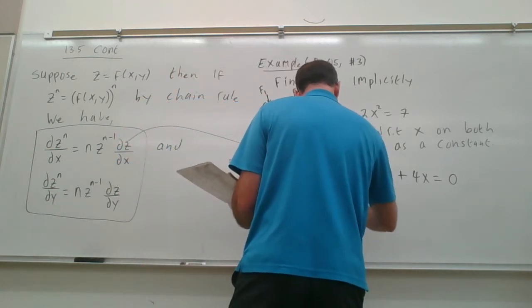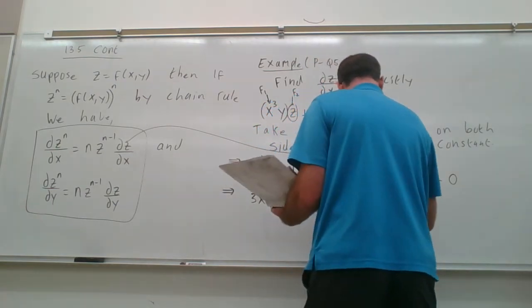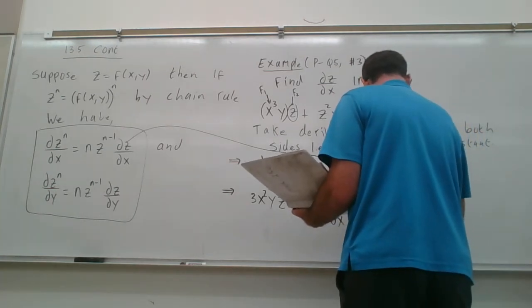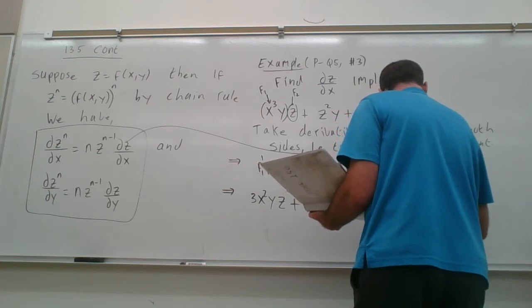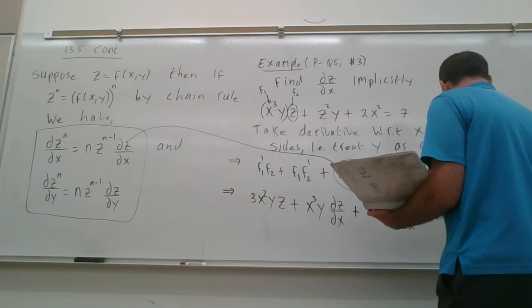So partial z with respect to x, which is a little bit of stuff. I'm going to write the z and the y together, it would be 2yz partial z with respect to x plus 4x equals 0.